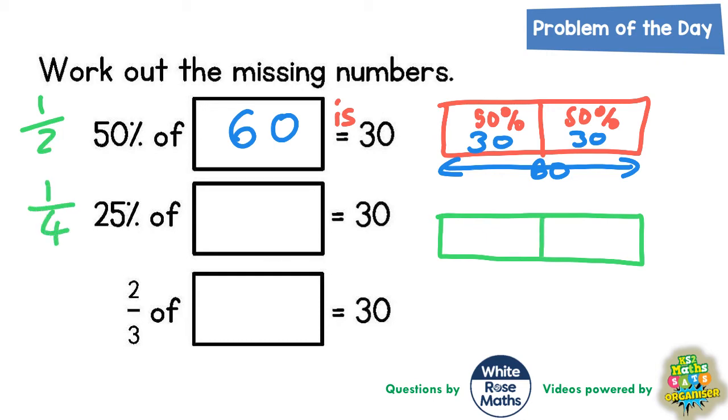But again we're being told that 25 percent of this mystery number, which would be the total of all four bars, is 30. The equal sign means 'is', so 25 percent is 30.